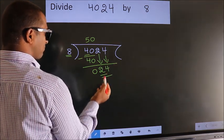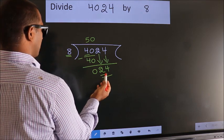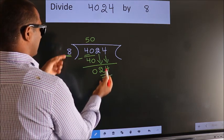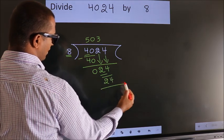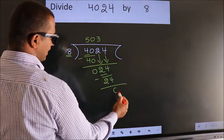So 24. When do we get 24? In 8 table. 8 threes, 24. Now we subtract. We get 0.